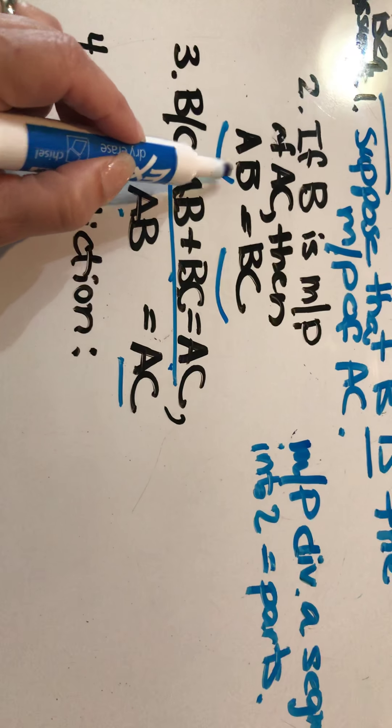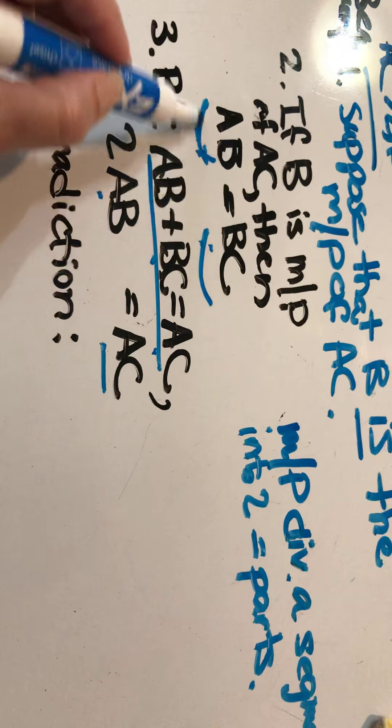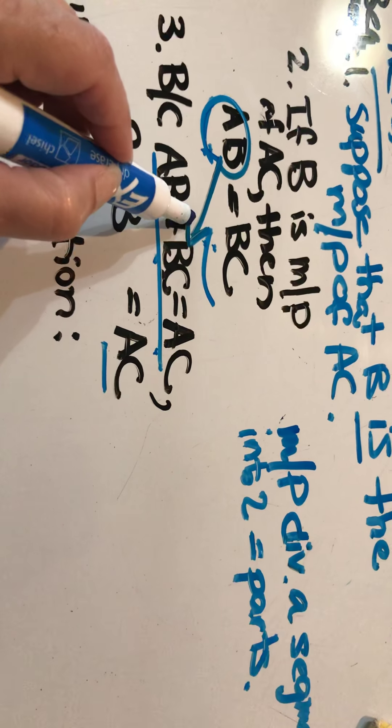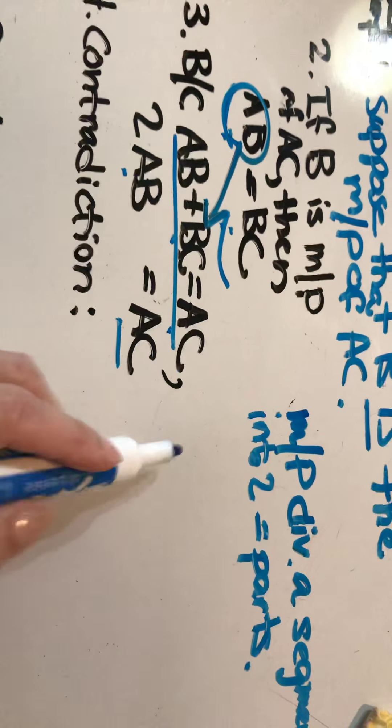In the previous one, we said AB equals BC. So for BC, I substituted in AB, which leaves me with 2AB. So that's substitution.